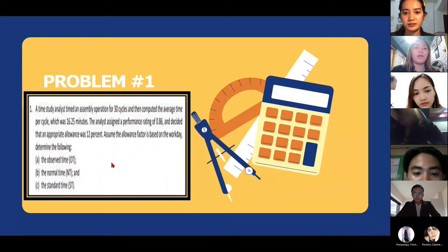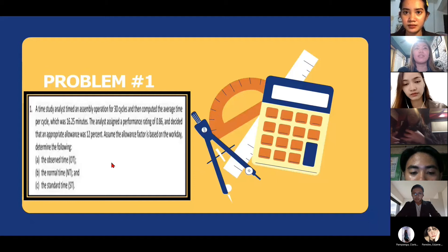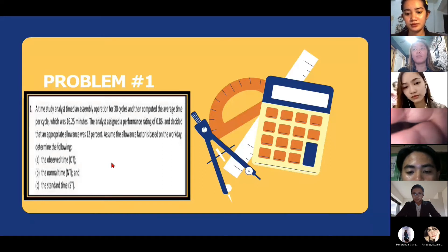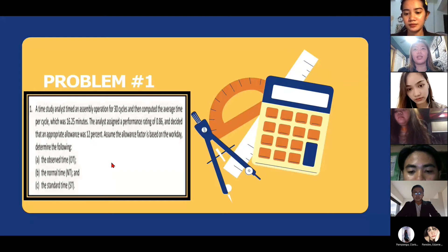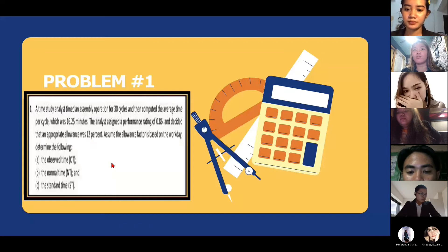Hello, ma'am. I'm Clarissa. I'll ask you question number one. Find study analysis time and assembly operation for 30 cycles and then compute the average time per cycle, which was 16.25 minutes. The analysis assigned a performance rating of 0.86 and decided that an appropriate allowance was 12%. Assume the allowance factor is based on the work day and determine the following.